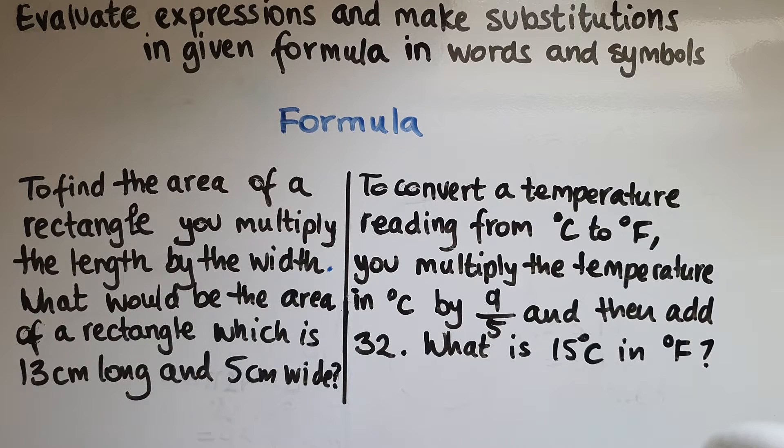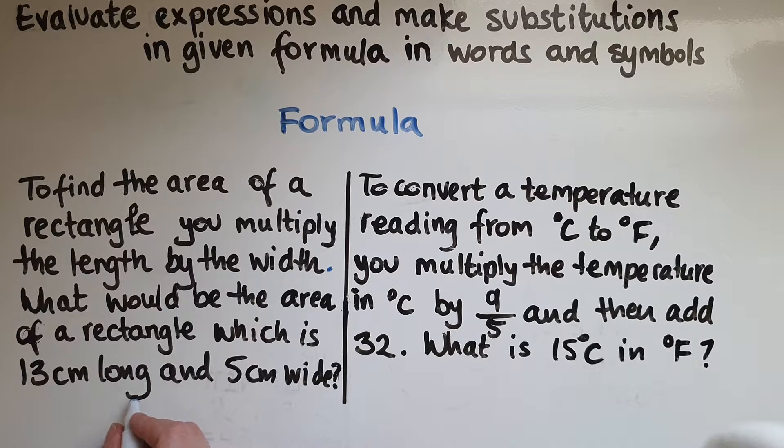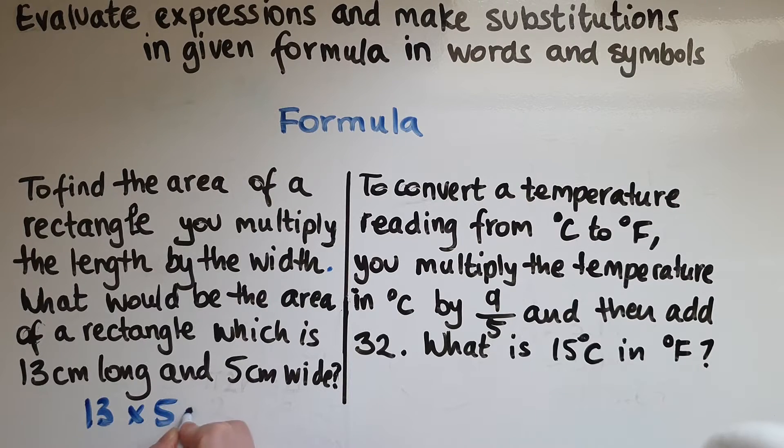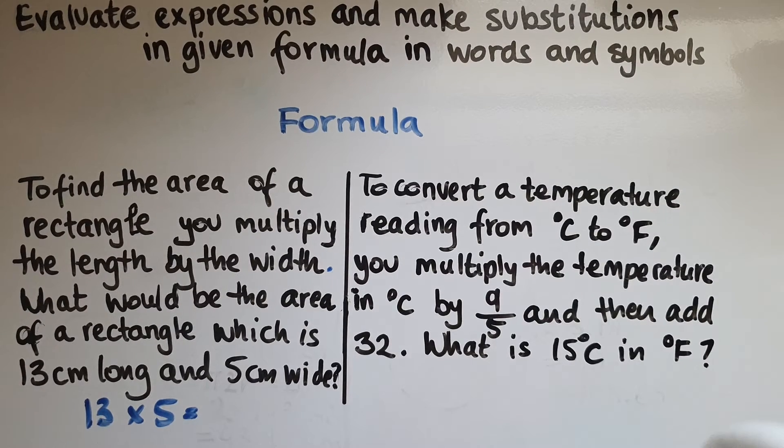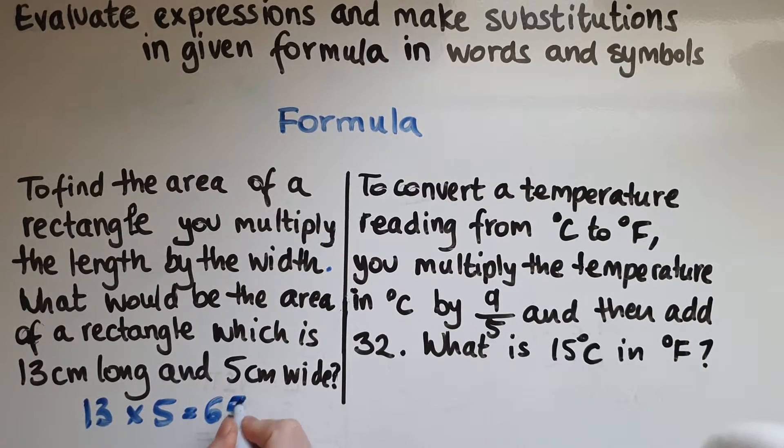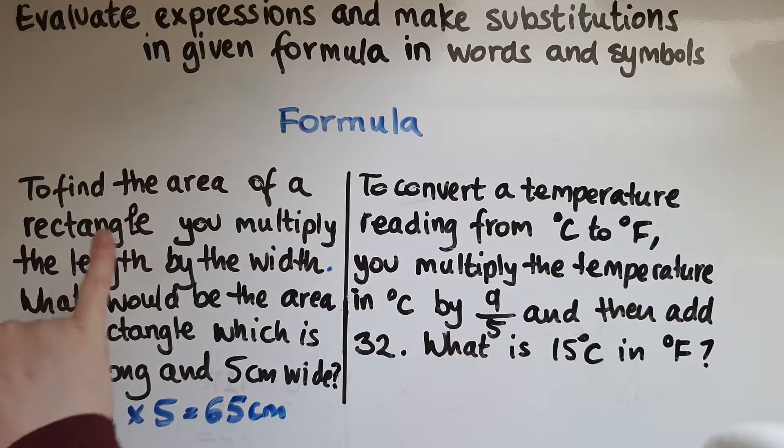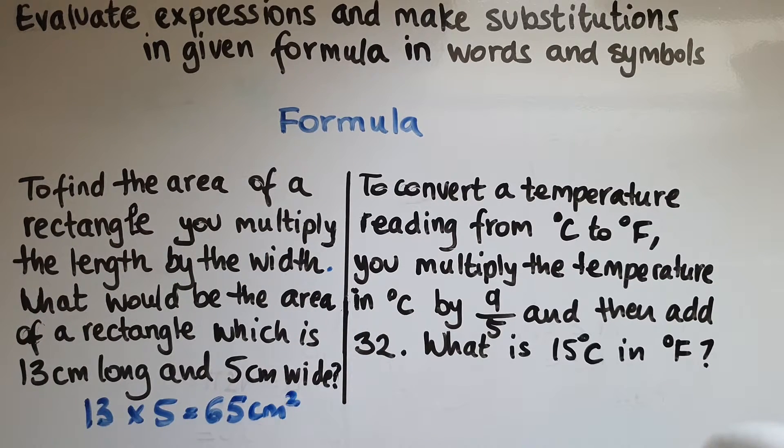So we're working out the area and it says to multiply. So we go 13 times 5, that gives us 65. We input centimeters and since we're working out the area this must be squared.